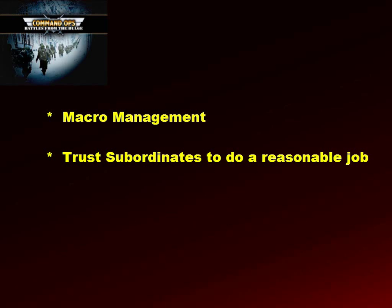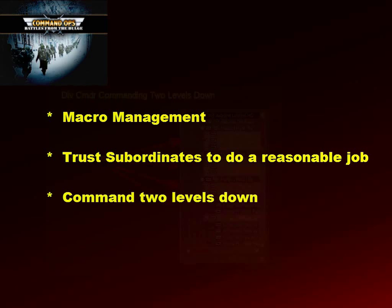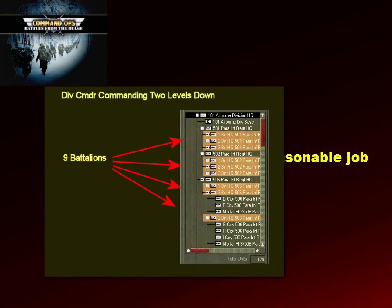In real life, commanders tend to command two levels down. For example, in a typical army command structure of a corps comprising three divisions of three brigades of three battalions of three companies, the corps commander would typically issue orders to brigades while the divisional commander orders his battalions. This means a commander would typically be ordering around nine line subordinates plus several support subordinates like artillery and engineers.